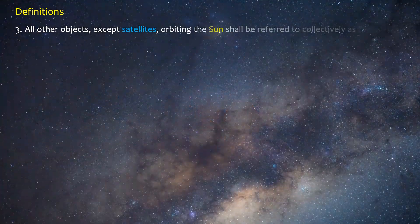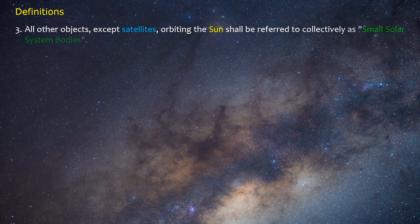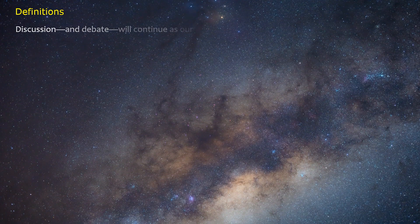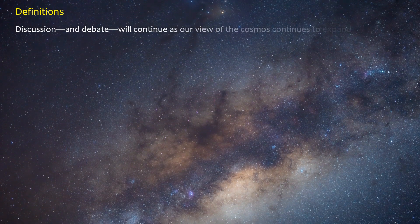Three: All other objects except satellites orbiting the sun shall be referred to collectively as small solar system bodies. Discussion and debate will continue as our view of the cosmos continues to expand.